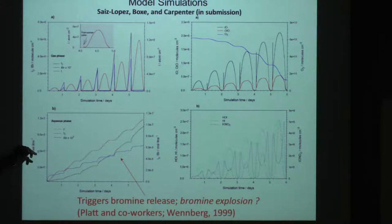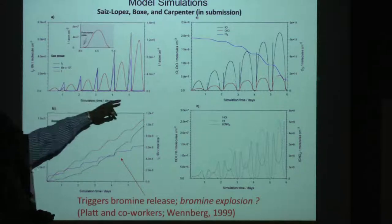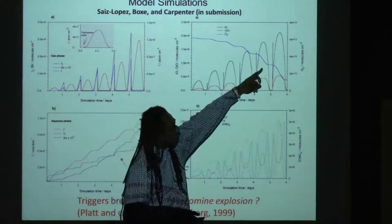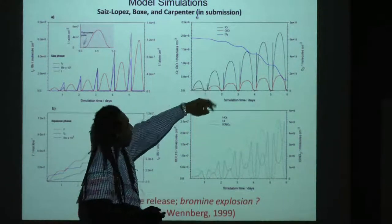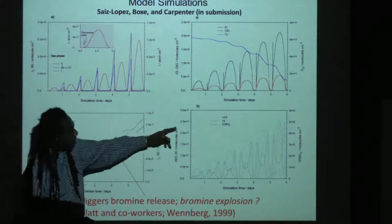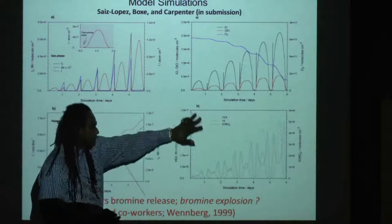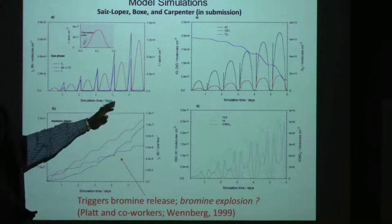We didn't add any replenishment sources of iodine — we just assumed an initial source that would be depleted over some number of days. We were able to reproduce the destruction rate of ozone, matching field experiments well, along with the evolution of iodinated gases such as IO and OIO, and the hypoiodous acid that deposits and then reemits. The take-home message is that we reproduced field measurements fairly well.